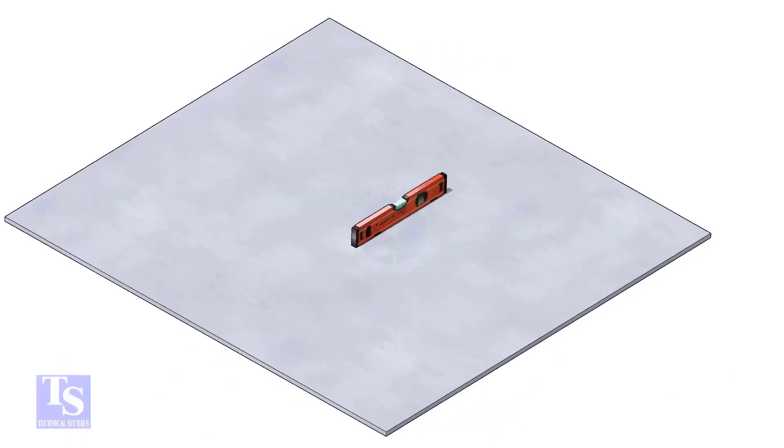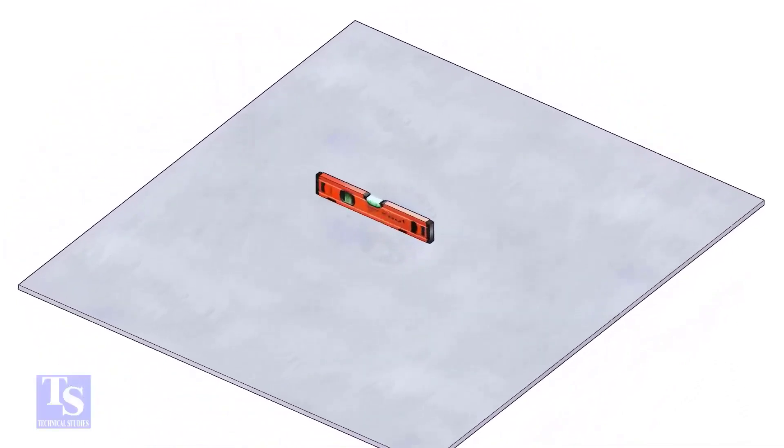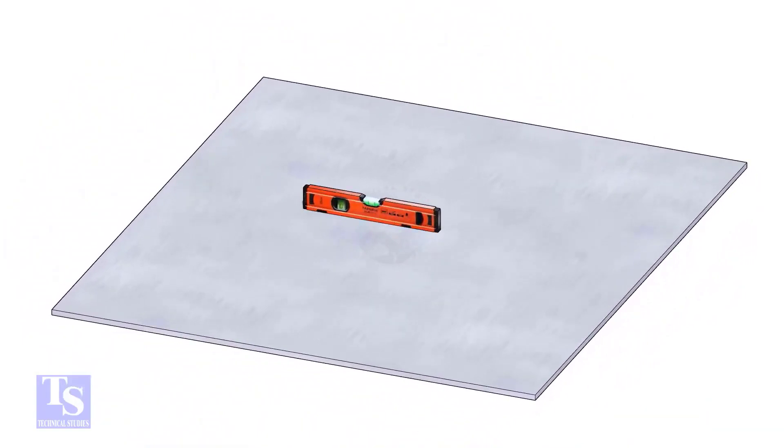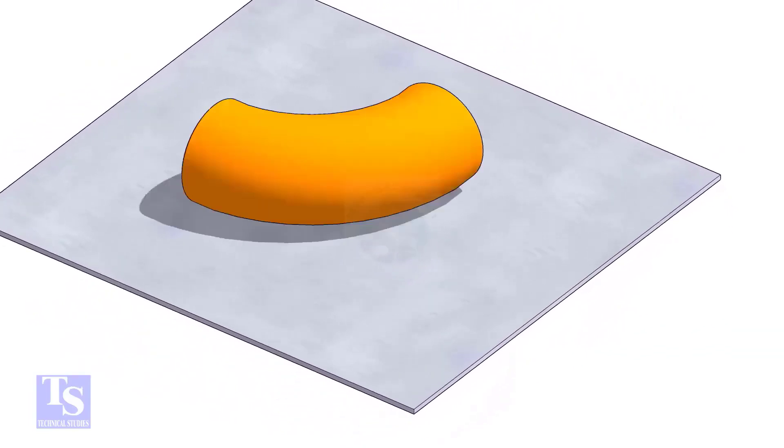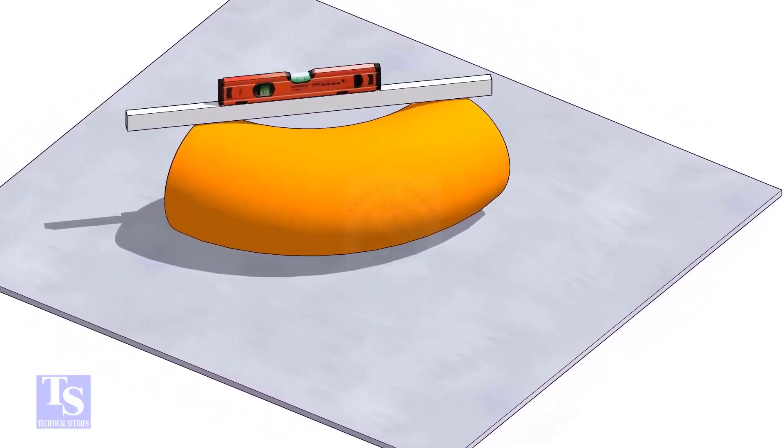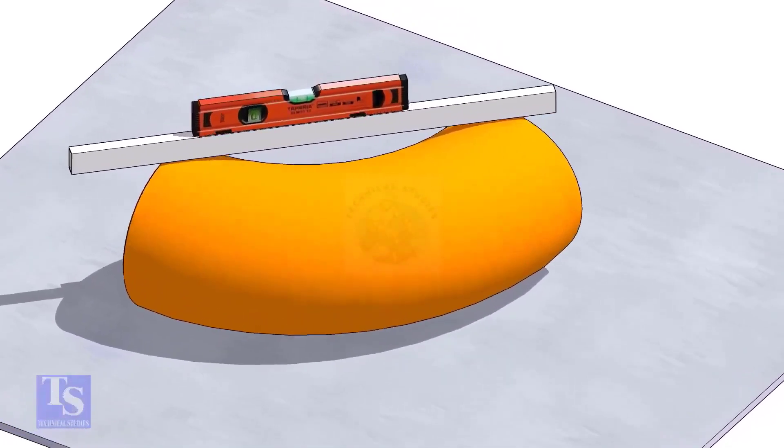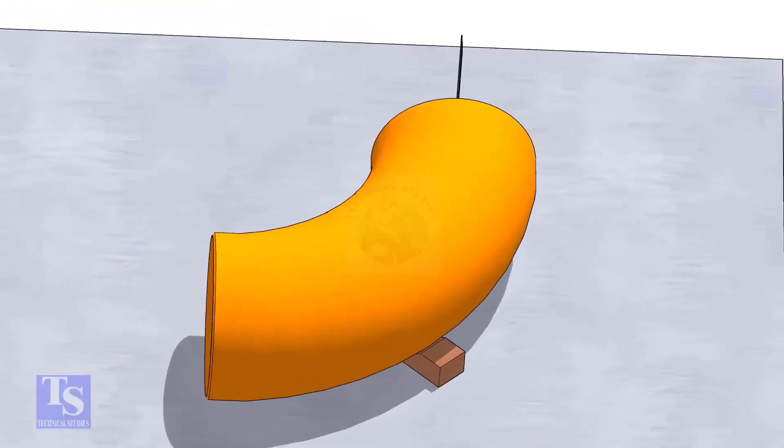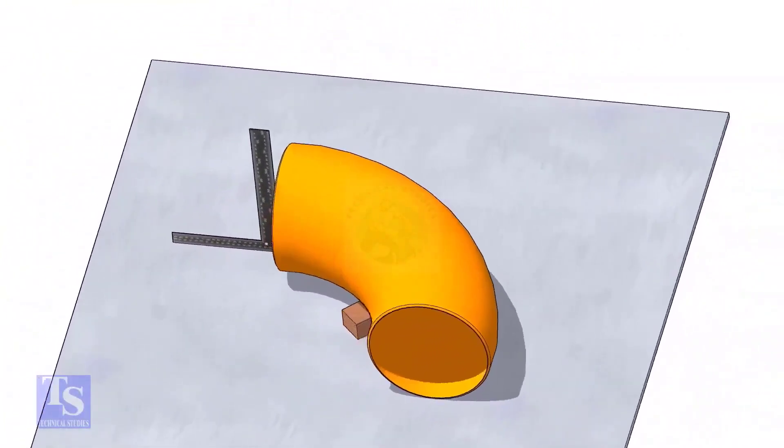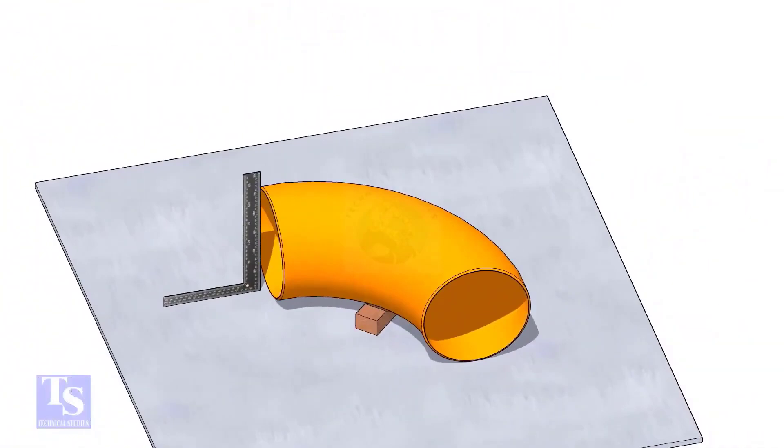Let us mark the center of the elbow. Choose a leveled plate and put the elbow on it. Check the level of the elbow. Check the squareness of the face of the elbow with the plate. If necessary, put some packing below as shown.